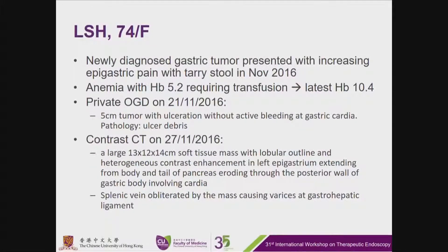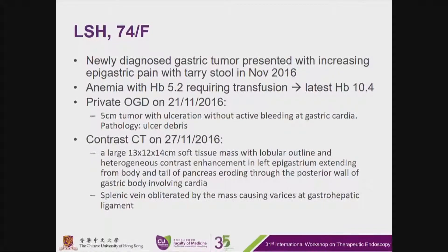We will have the next case of an elderly lady with newly diagnosed gastric tumor. She presented with increasing epigastric pain and tarry stool in November, with anemia requiring transfusion. Private OGD at that time showed a 5 cm tumor with ulceration but without active bleeding at the cardia. Pathology showed ulcerative risk. Contrast CT was done showing a large 13x12x14 cm soft tissue mass with contrast enhancement in the epigastrium, extending from the pancreas and eroding into the gastric body.